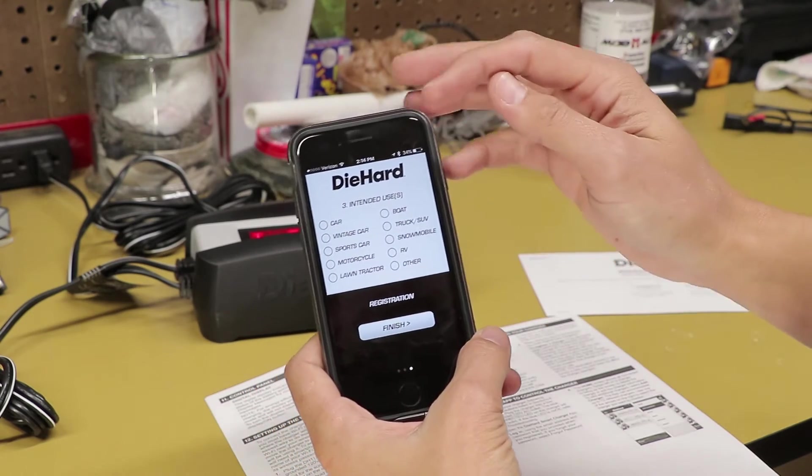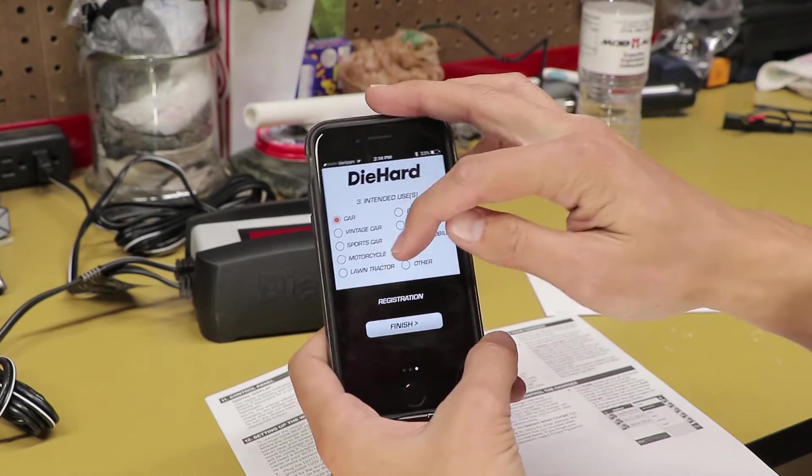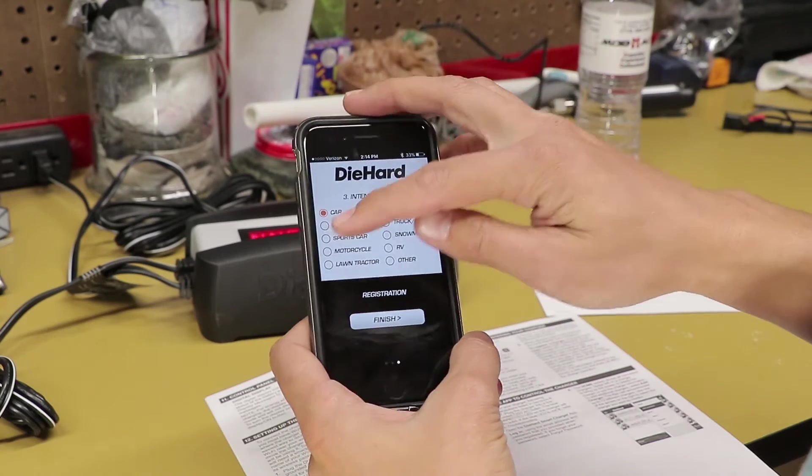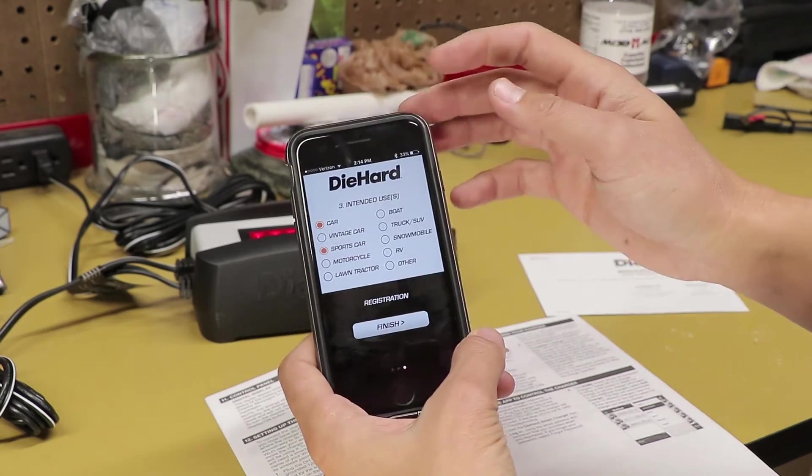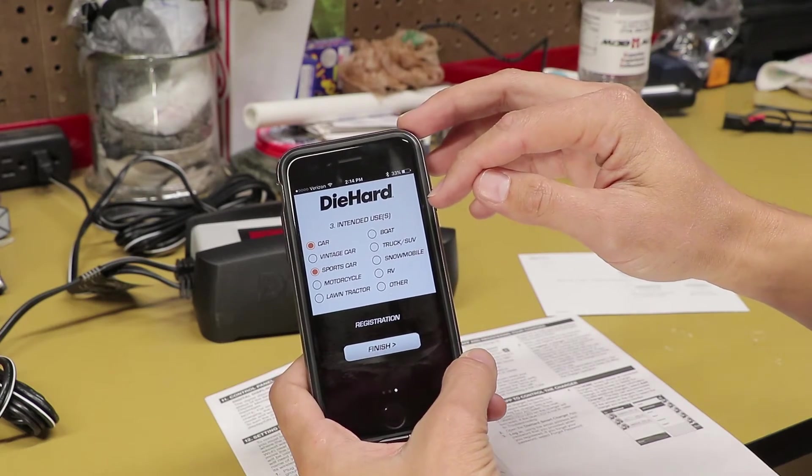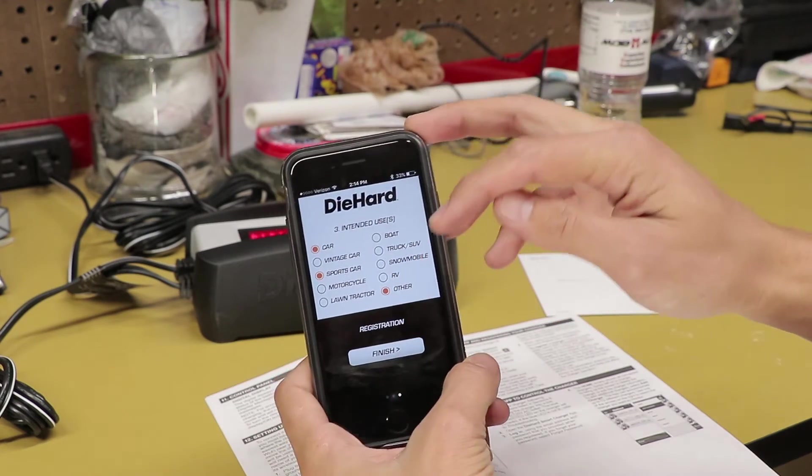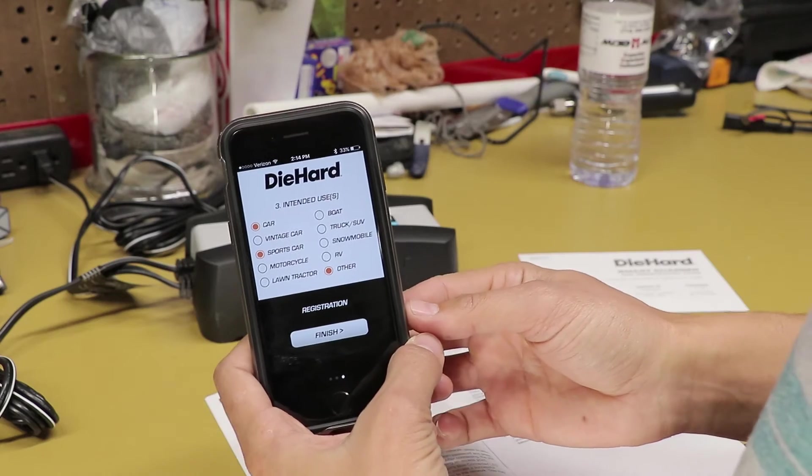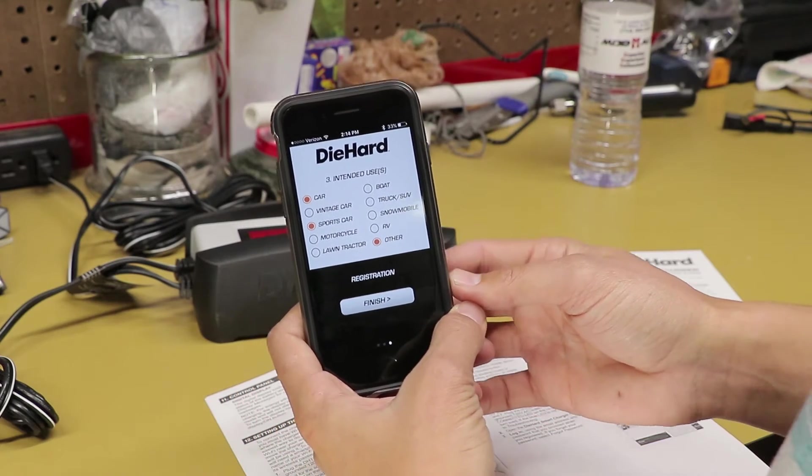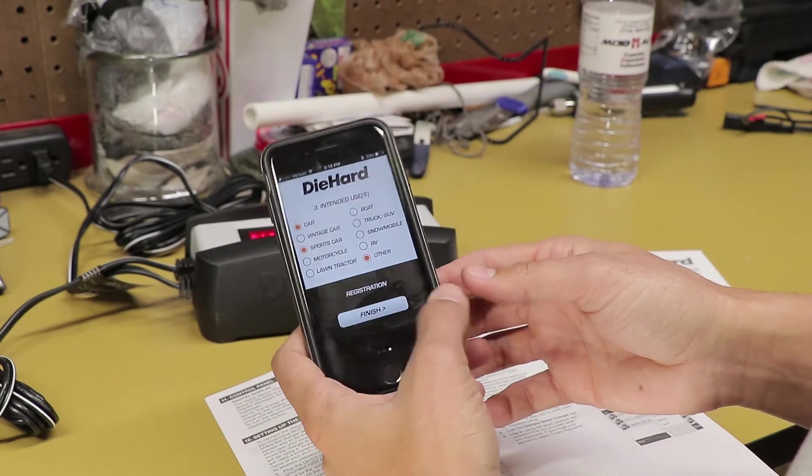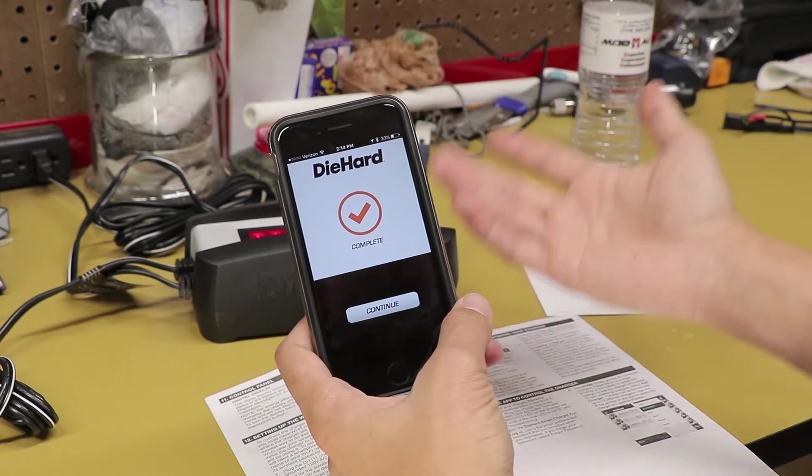And then the intended use. Most of the time I'm going to be using this for car. Oh you can check more. Car. Sports car. We'll use other. I use a battery for a canoe that has a motor on it. So finish that up. Says it's complete.